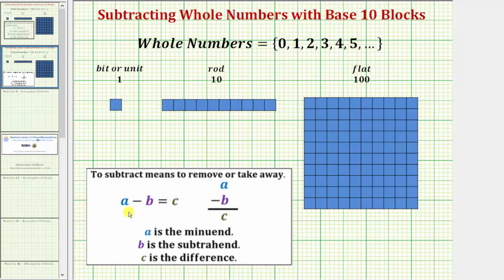Where a, the quantity we begin with, is called the minuend; b, the quantity we subtract or remove, is called the subtrahend; and c, the result, is called the difference.